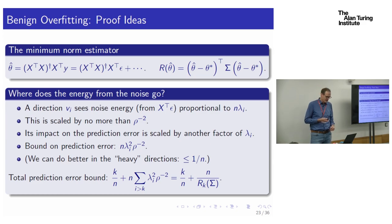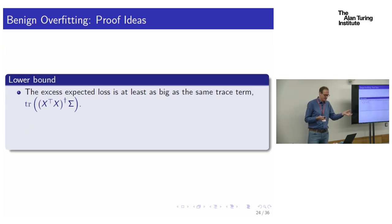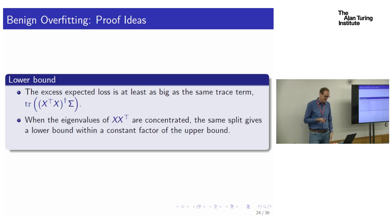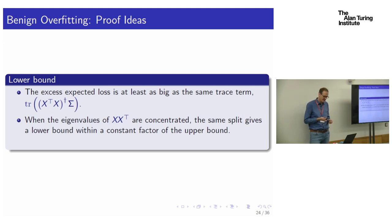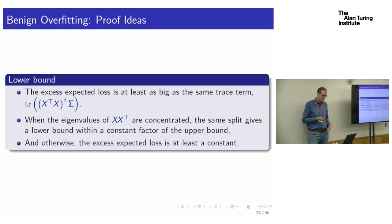On the converse side, you can show the excess expected loss is at least as big as exactly the same expression. When eigenvalues are concentrated — when you're in the regime where R_K is sufficiently large — you get the same lower bound within a constant factor. When eigenvalues are not concentrated, there's a separate argument showing the excess expected loss is at least a constant. So you get matching upper and lower bounds — it really is precisely the right thing.